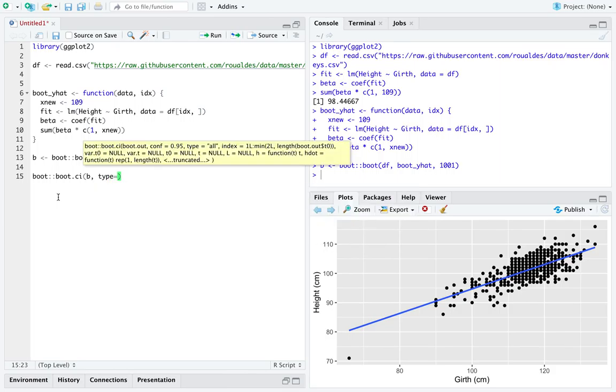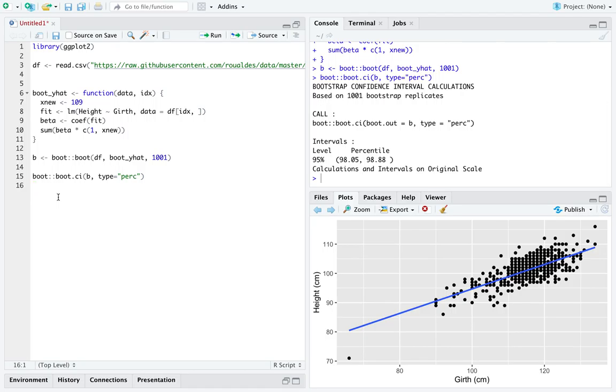Specify type equals to percent, and we can get out a 95% bootstrapped percentile-based confidence interval for predictions of height when girth is equal to 109. So in fact, it looks like 109 puts us up here.